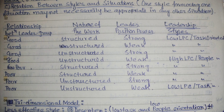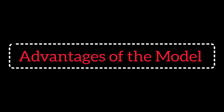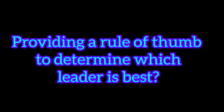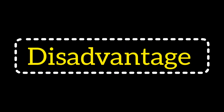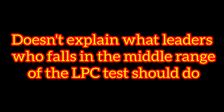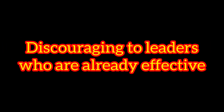Now for some advantages and disadvantages of this model. The first advantage is that it provides a rule of thumb to determine which leader is best for a job, it encourages leaders to practice self-awareness, and it is very easy to calculate and understand. For disadvantages: the Fiedler Contingency Model is overly rigid and theoretical, it doesn't explain what leaders who fall in the middle range of the LPC test should do, self-assessment on the LPC scale is not a reliable test, and it can be discouraging to leaders who are already effective.